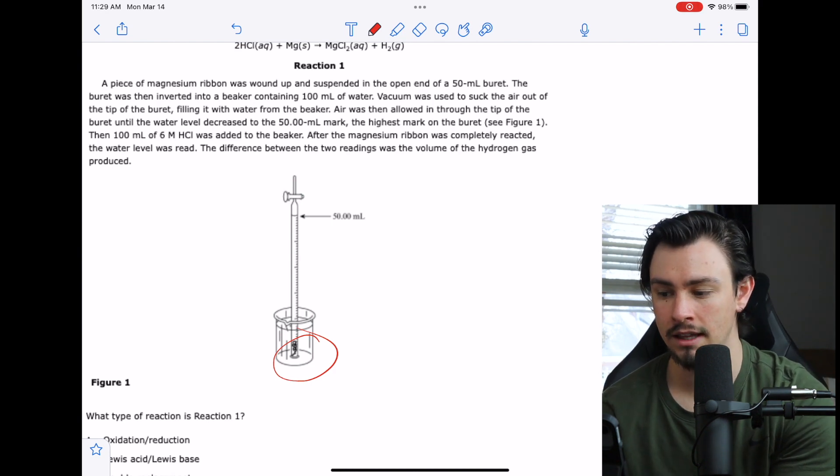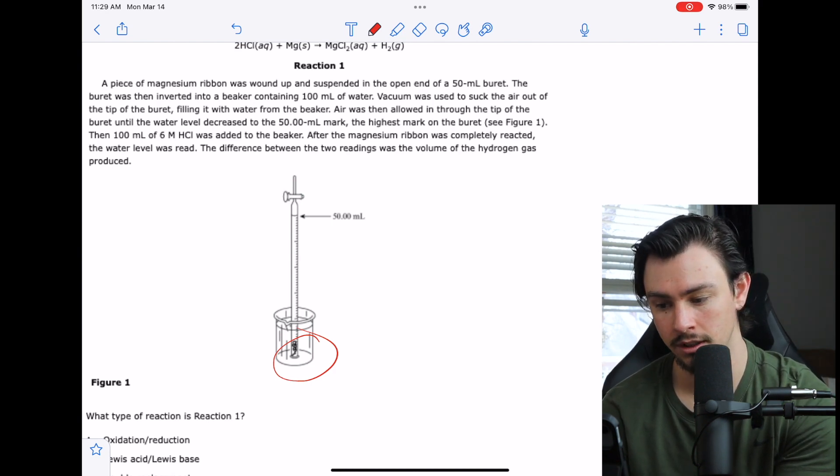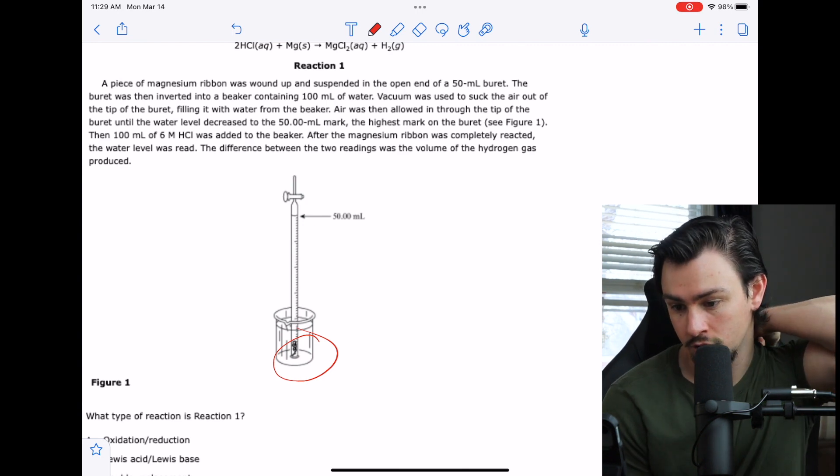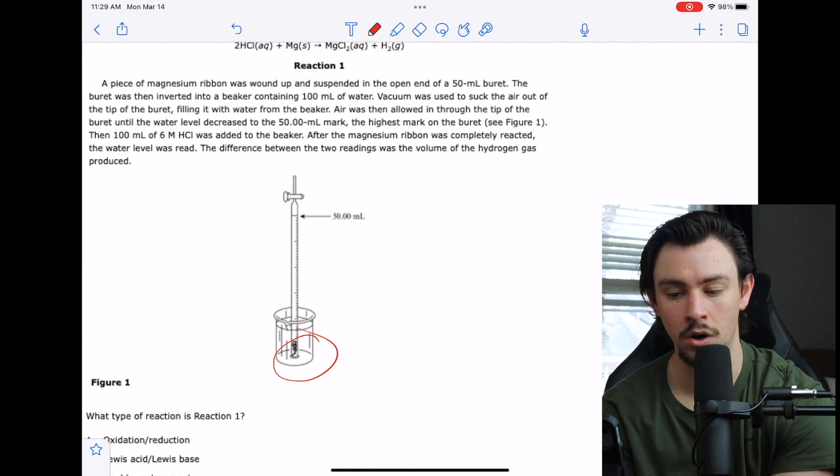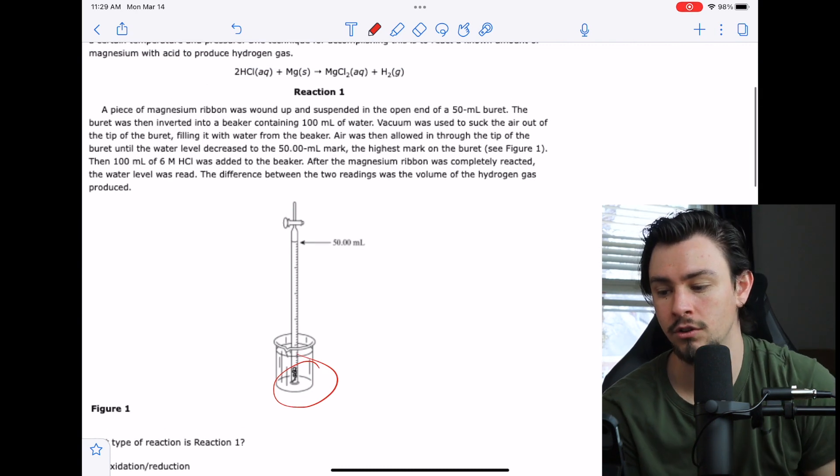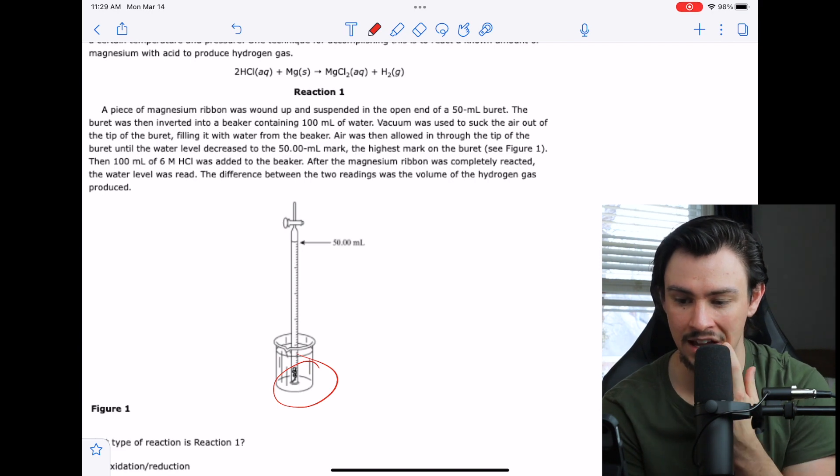Air was then allowed in through the tip of the burette until the water level decreased to the 50 milliliter mark, the highest mark on the burette. Then 100 mils of hydrochloric acid was added to the beaker. After the magnesium ribbon was completely reacted, the water level was read. The difference between the two readings was the volume of the hydrogen gas produced.